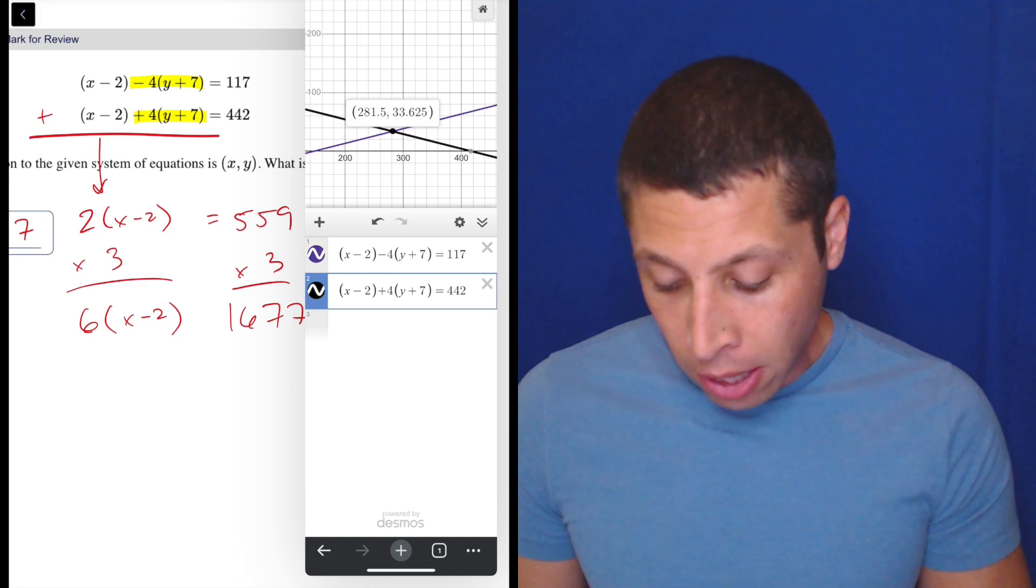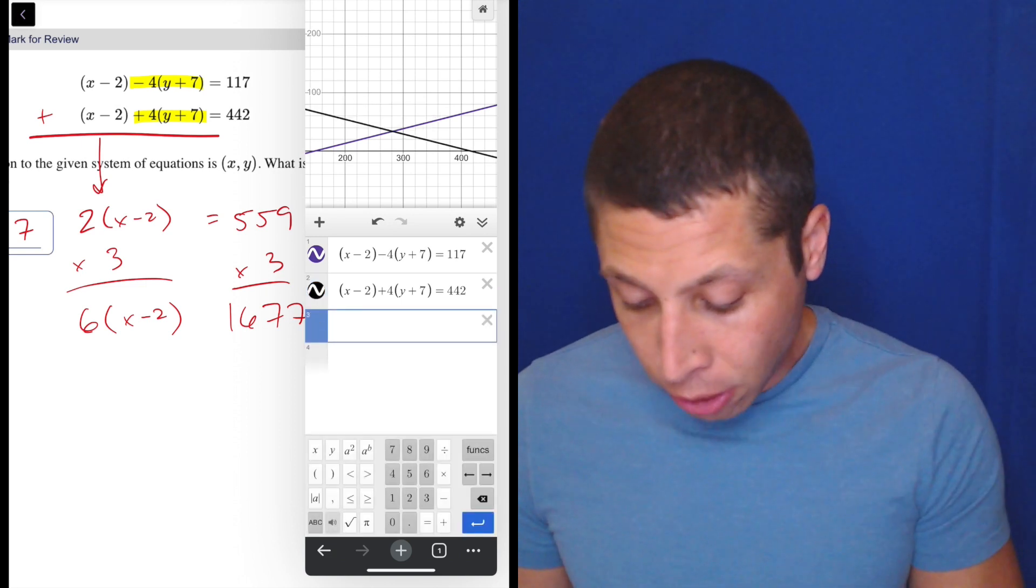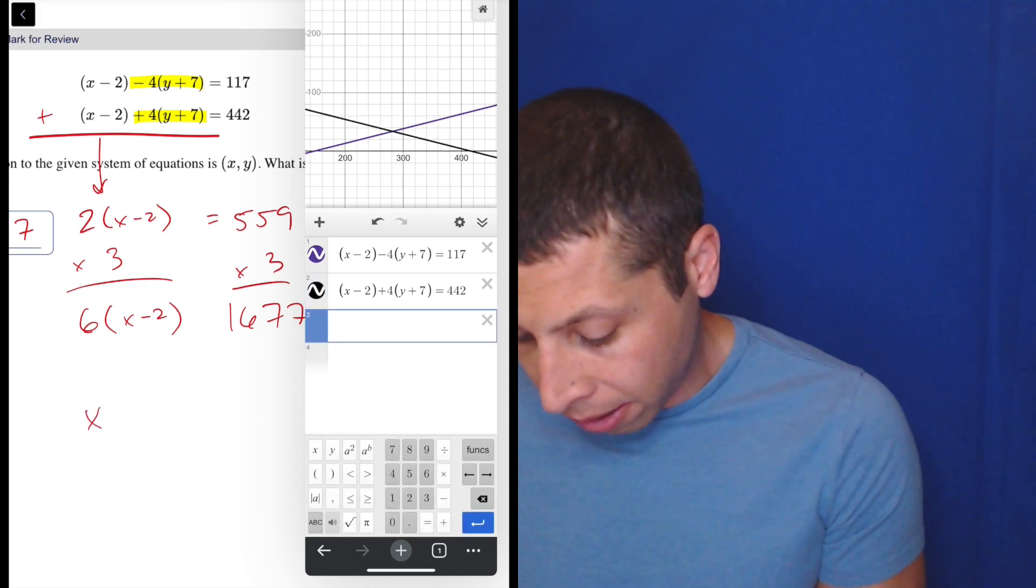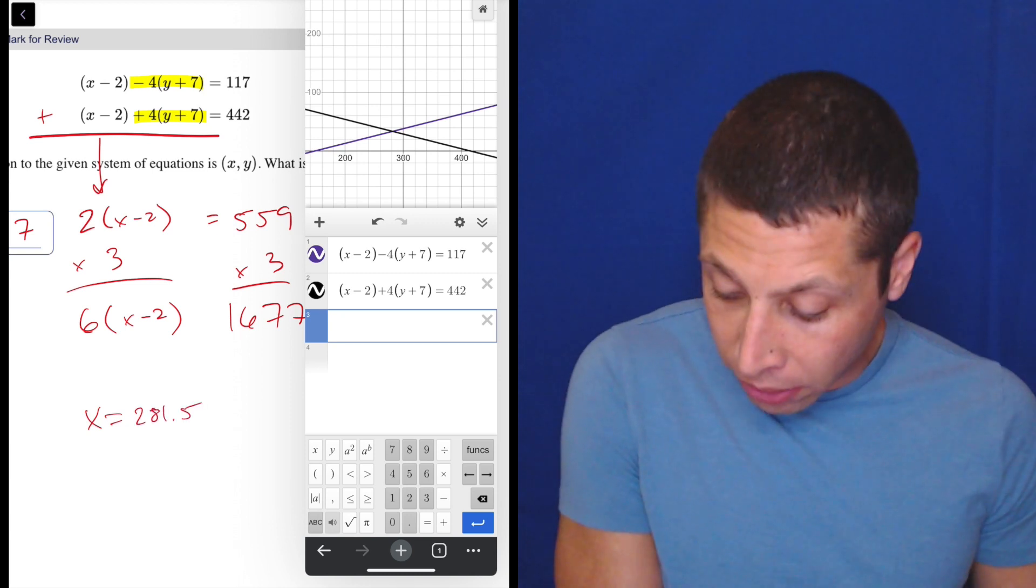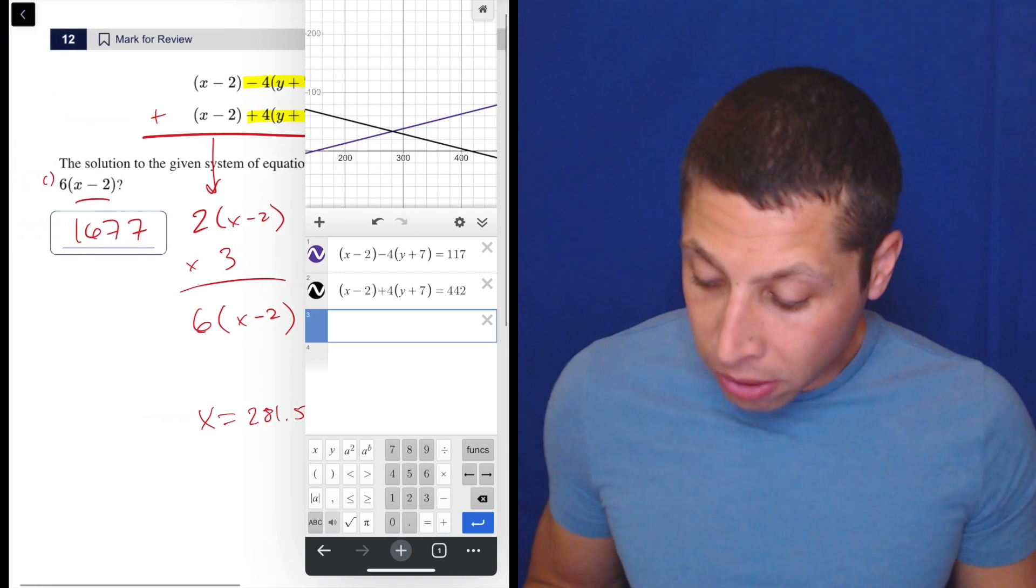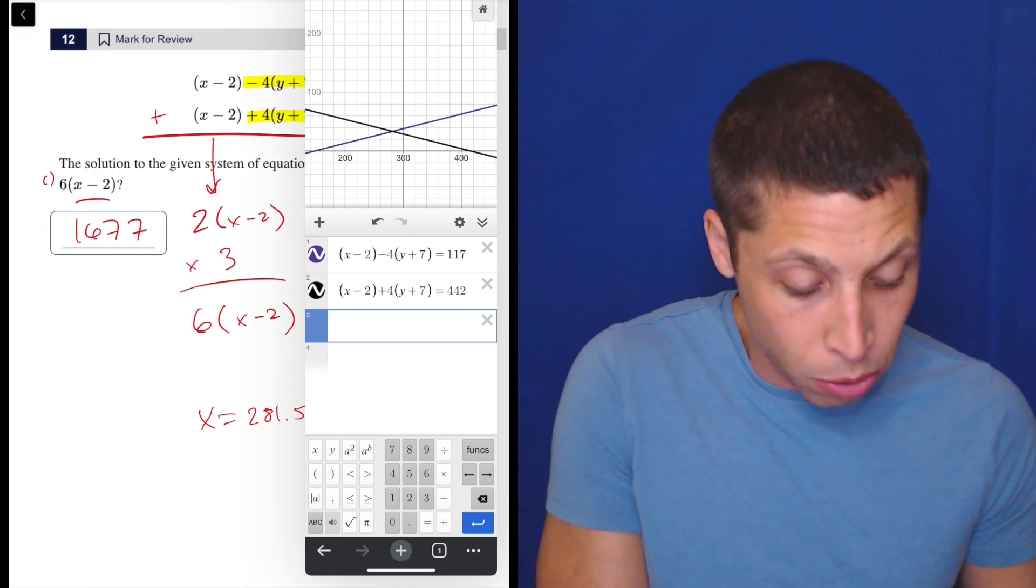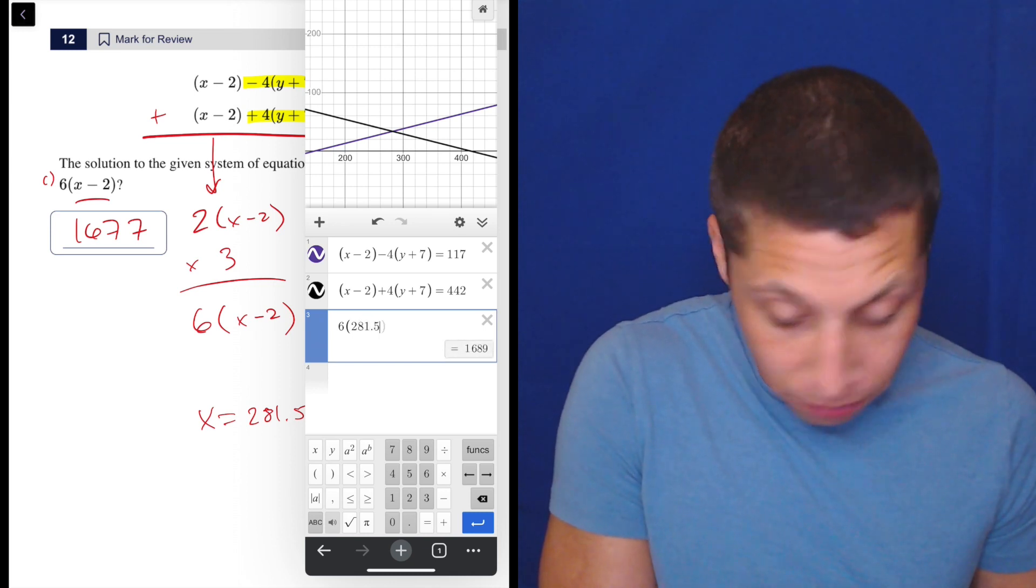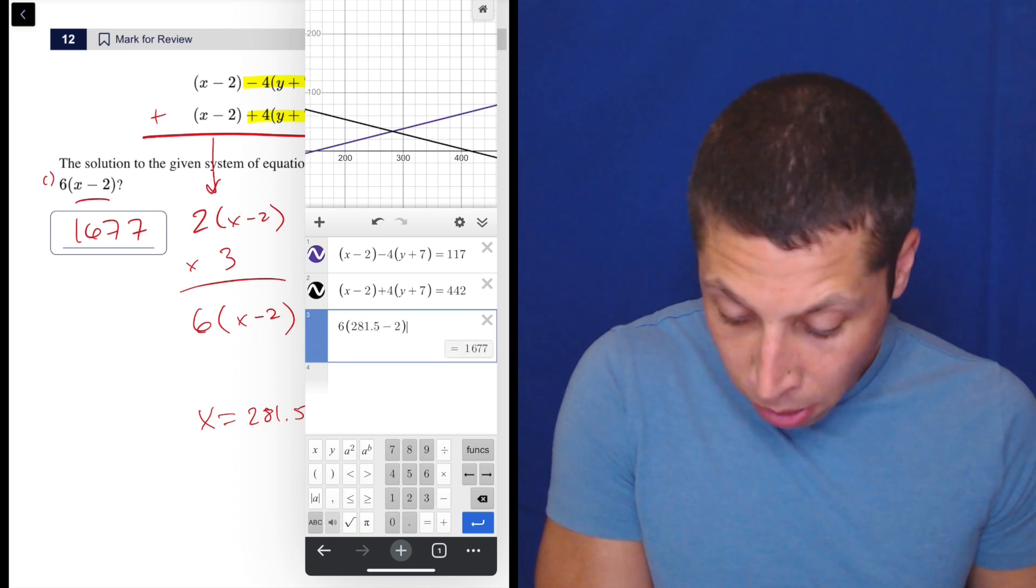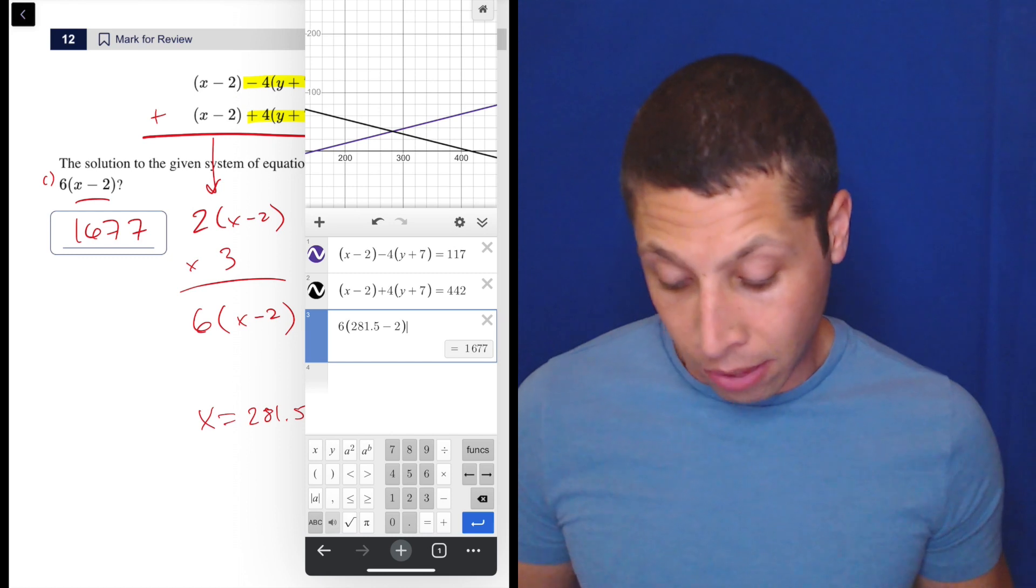So now I would just say, all right, let's take that 281.5. Let's put it here. x equals 281.5, so we don't forget. And going back to Desmos, or whatever calculator you want, what did they want from us? They wanted 6 times (x - 2). So that's 6 times 281.5 minus 2. And there it is, the 1677 that we got before.